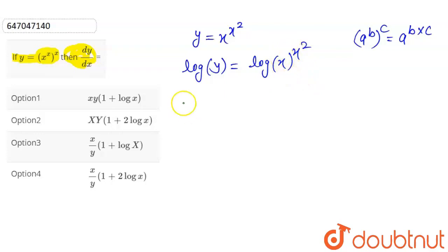Here you will have a property. Log a power b, so power will come out. So LHS is log y, power will come out. So x square times log x.